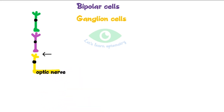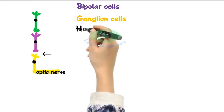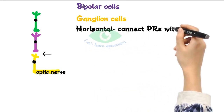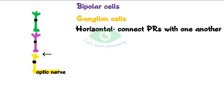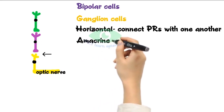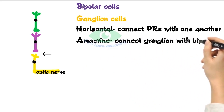Horizontal and amacrine cells are interneurons connecting neural elements. Horizontal cells connect photoreceptors with one another; there are three types, responsible for polarity, spectrosensitivity, speed, and helping the eye adjust to bright and dim environments. Amacrine cells connect ganglion cells with bipolar cells; 42 different types of amacrine cells have been identified.